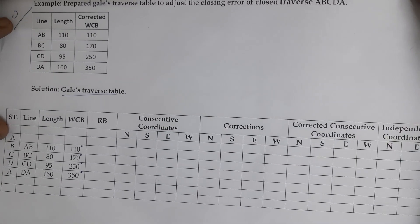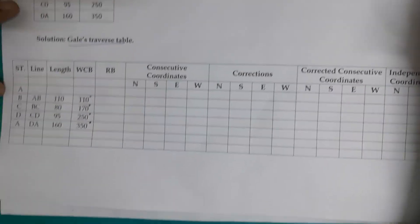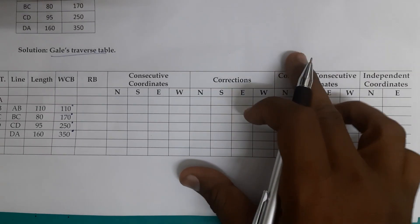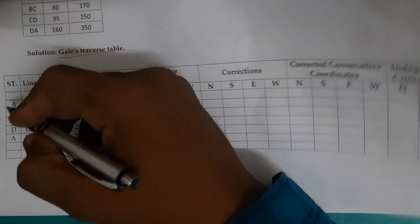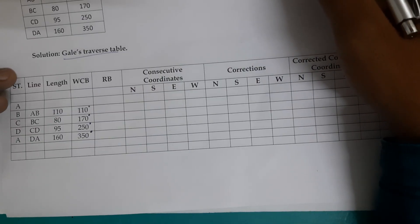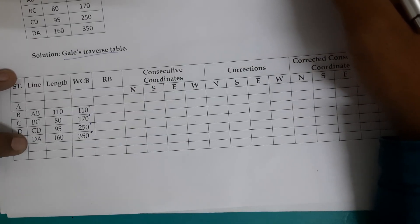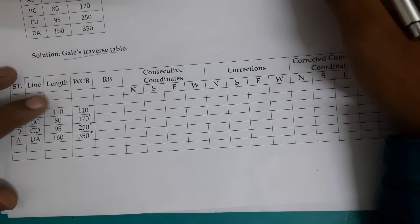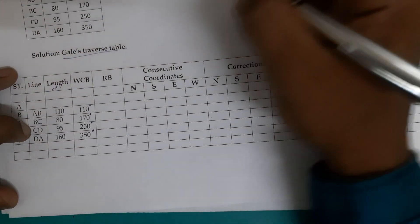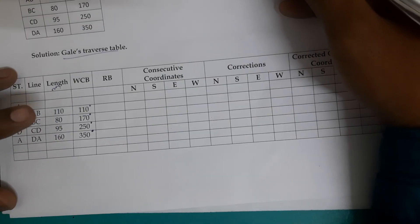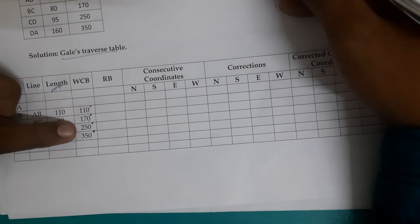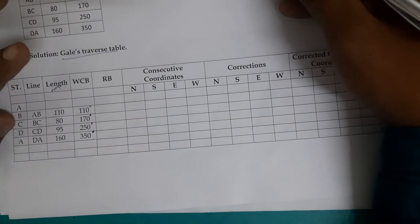We need to prepare a Gale's Traverse table. The first column contains the stations: A, B, C, D. The lines are AB, BC, CD, and DA. The lengths are: AB = 110 m, BC = 80 m, CD = 95 m, DA = 160 m. The whole circle bearings given are: 110°, 170°, 250°, and 350°.